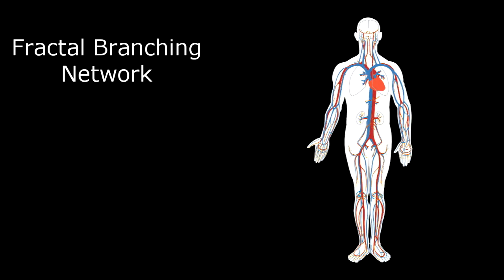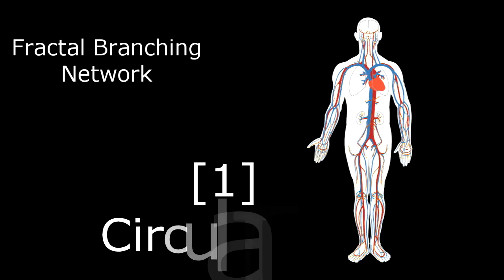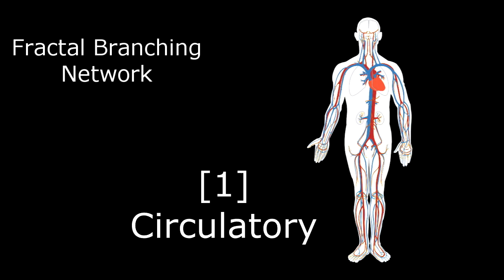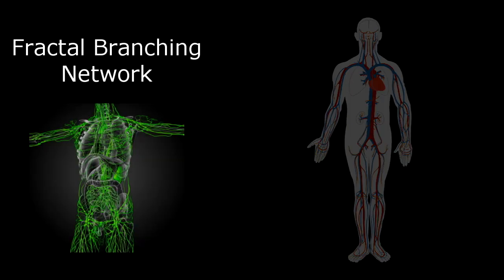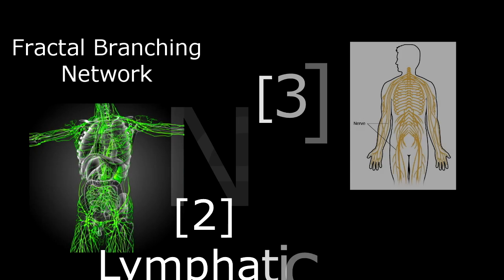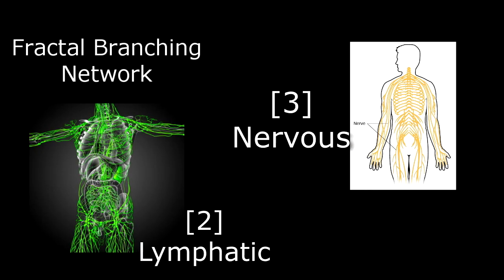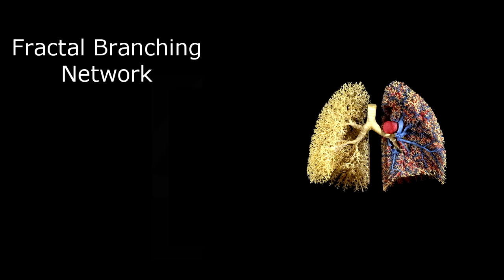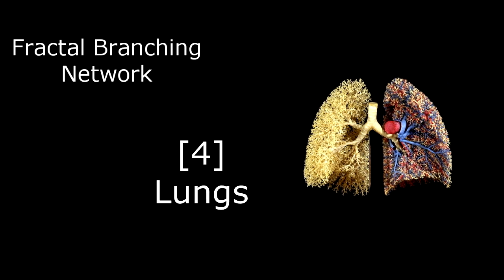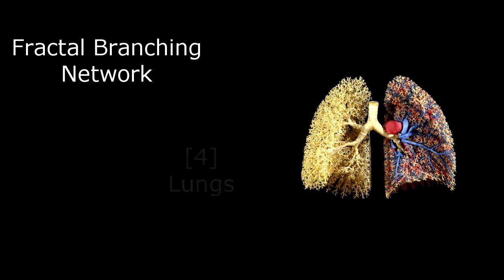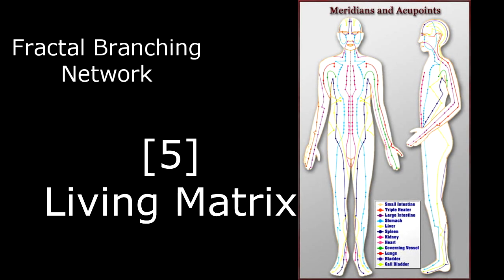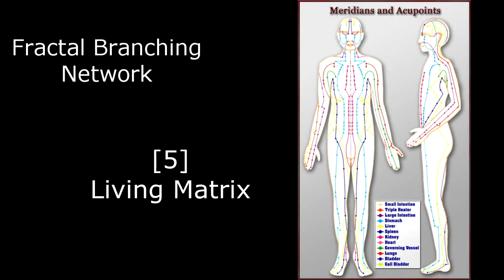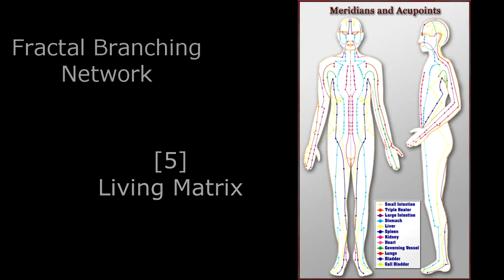This fractal branching network has basically five components to it: the blood or circulatory system, the lymph or lymphatic system, the nervous system, the lungs or the tracheal bronchial trees, and the living matrix — the connective tissue matrix — which is the home of the meridians.